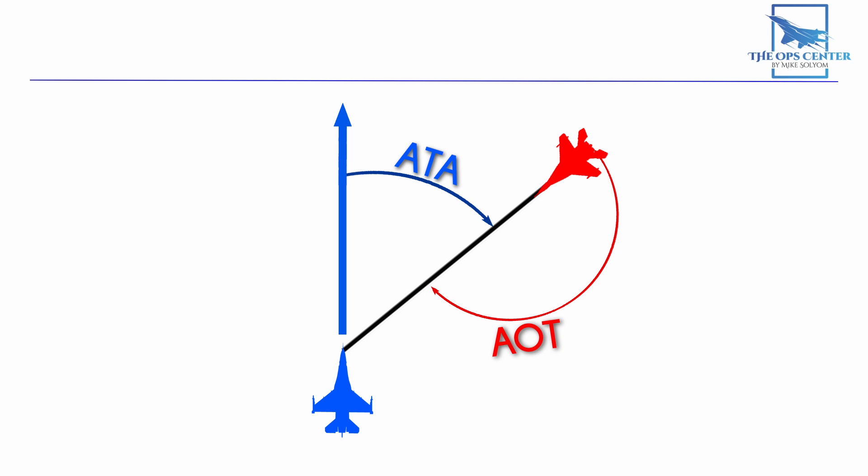Here's how that looks visually. The antenna train angle is a good analog for closure rate. Zero ATA will have a higher closure rate than anything over 90. With AOT, you can go from 0 all the way at the tail to 180 at the target's nose.